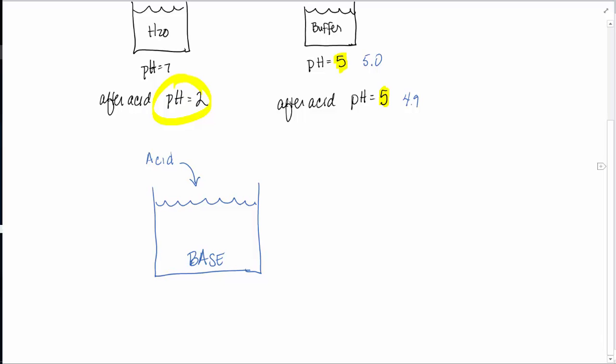And because it's a buffer, if I were to add a base, the pH wouldn't dramatically change, it means there must be an acid in there. So my buffer system must contain both a base and an acid. So then, of course, the question becomes, well, why don't they neutralize each other?